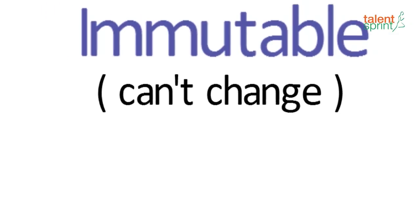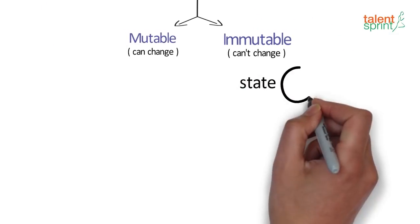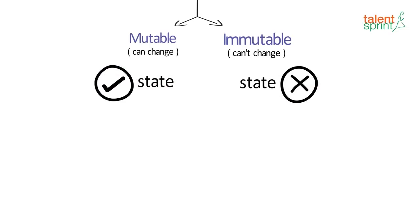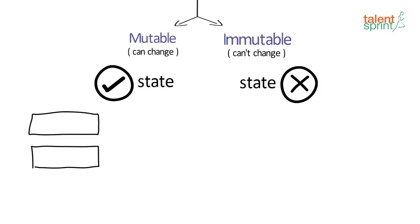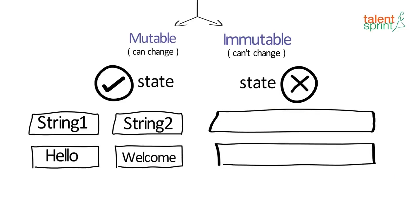An immutable object is an object whose state cannot be modified after it is created, while the state of a mutable object can be changed throughout the program. So any string variable in Java cannot be altered after being initialized. When you alter a string in any way, you are actually creating a new string that holds the new value.